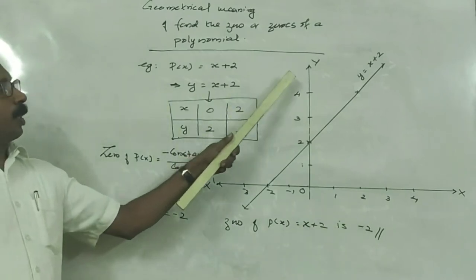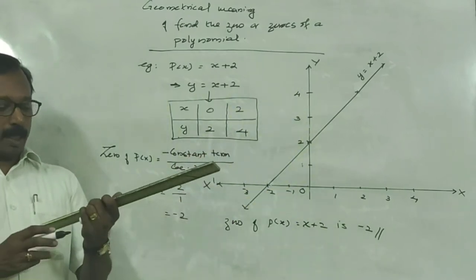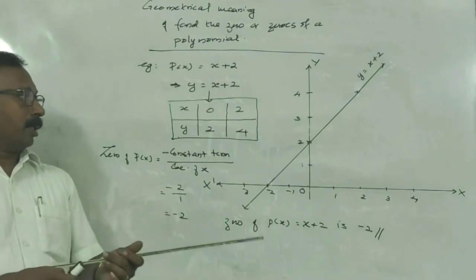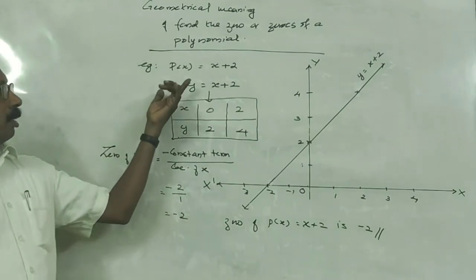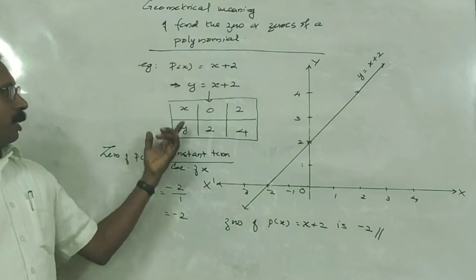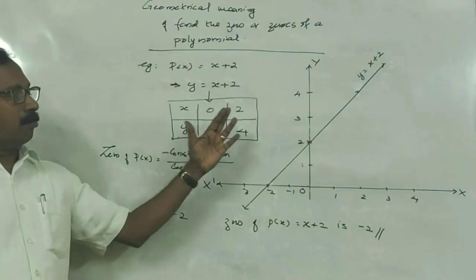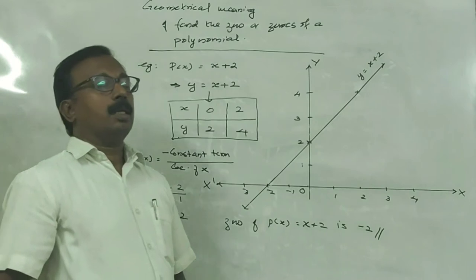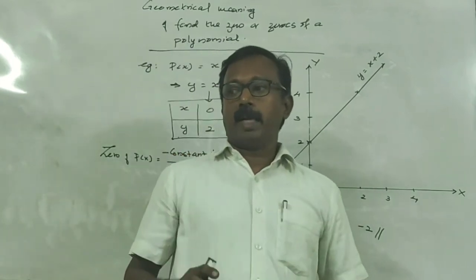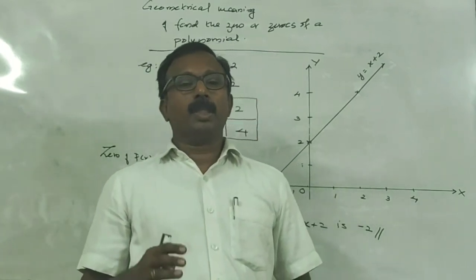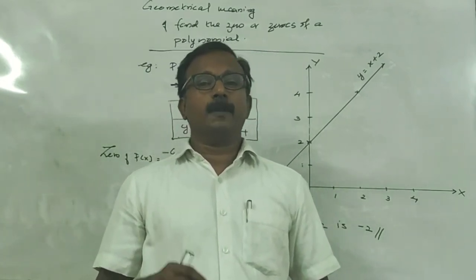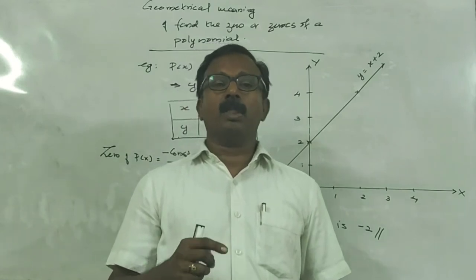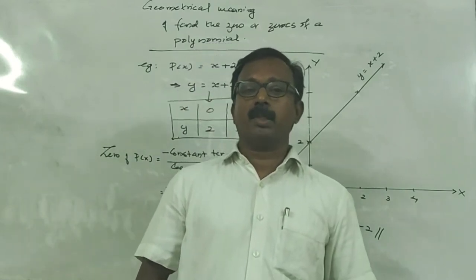We know that the zero of P(x) is minus constant term divided by coefficient of x. This is the formula to find the zero of P(x). Here the zero is minus 2 divided by 1, which gives minus 2. This way we can find the zero of a polynomial by using the algebraic method or the graphical method.